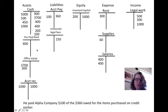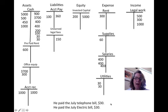Next, he paid Alpha Company $100 of the $360 that was owed: $100 out of cash and a decrease in accounts payable. Then the last two transactions: he paid the July phone bill of $30 and the July electric bill of $30 — two utility charges and two decreases in cash.